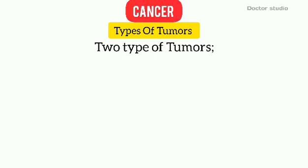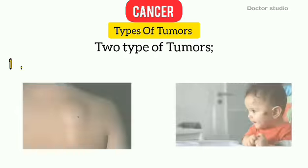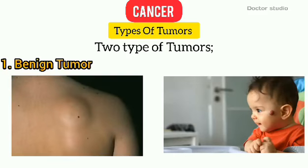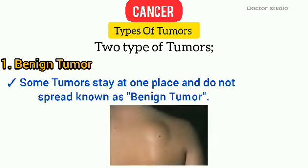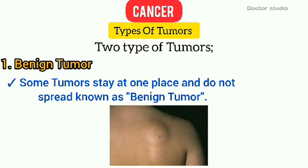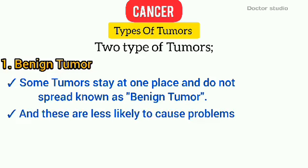There are two types of tumors. Number 1: Benign Tumor. Some tumors can stay in one place and don't spread — known as benign or non-cancerous tumors — and these are less likely to cause problems.